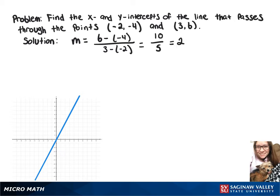So to find our equation, we'll do y minus 6 equals 2 times x minus 3. Now we'll distribute that 2, and we've got y minus 6 equals 2x minus 6. And then when we add 6 to both sides, we just get y equals 2x.